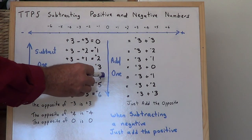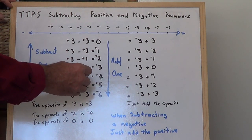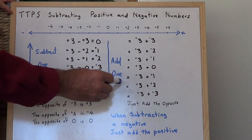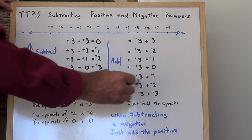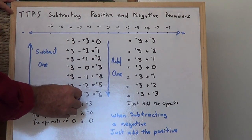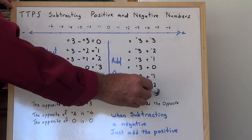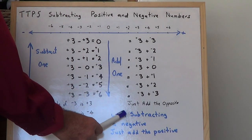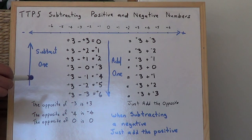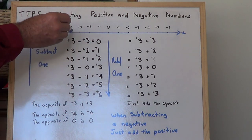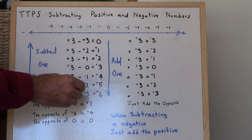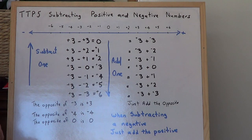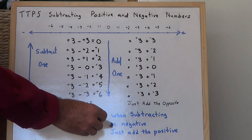Here it is. 3 subtract negative 1 is the same as 3 plus 1, which is 4. 3 subtract negative 2 is the same as 3 plus positive 2, which is 5. 3 take away negative 3 is the same as 3 plus positive 3. When subtracting a negative, you just add the positive. These are all subtraction problems which I've just changed to addition problems. So all you have to do when subtracting a negative — just add the opposite.